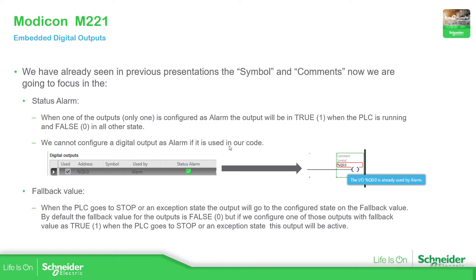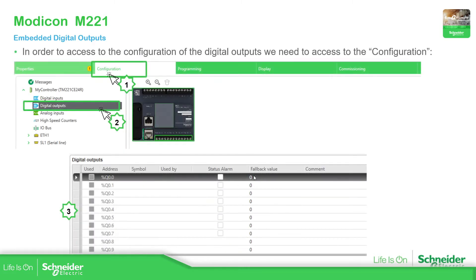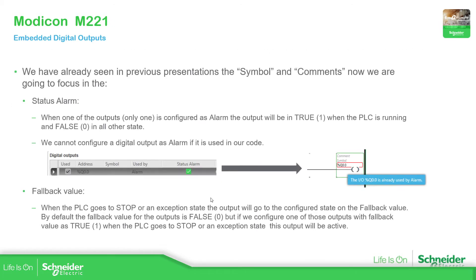The other important value is the fallback value, which by default is zero. When the PLC goes to stop or any other non-run state, the output will go to the fallback value you have defined. So if you have defined the fallback value as one — for example for Q0.3 — and the PLC goes to stop, the output will be activated. That is the idea of the fallback value.